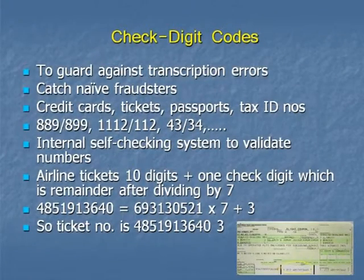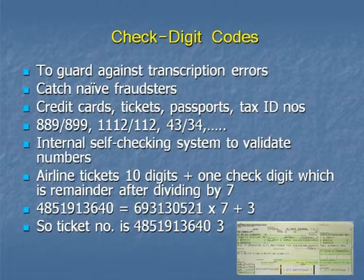So passports, credit cards, and so forth — what we're worried about are these sorts of typing errors: just maybe making one digit mistake, or adding an extra number, or flipping them around. Can you devise a system which is efficient enough to recognise almost all of those sorts of errors and stop the transaction going any further?